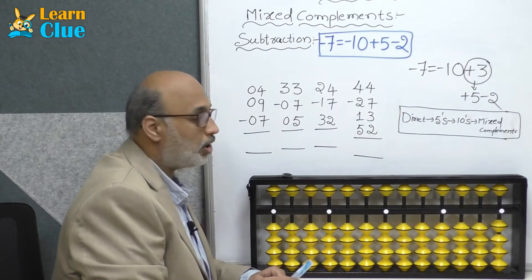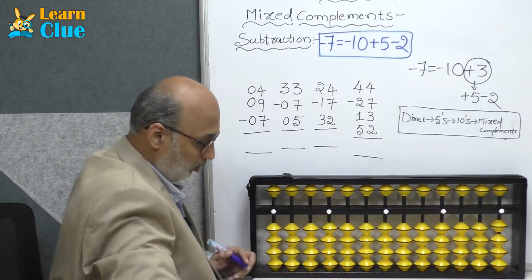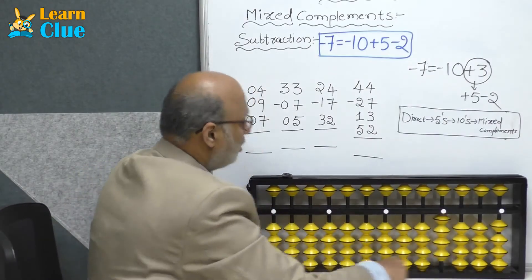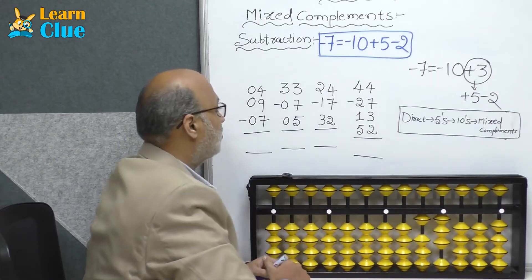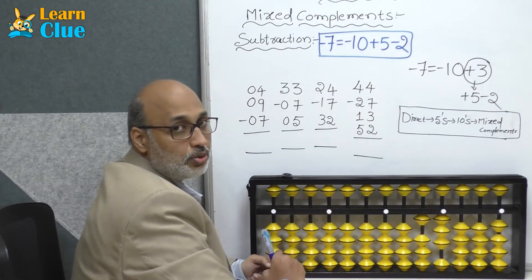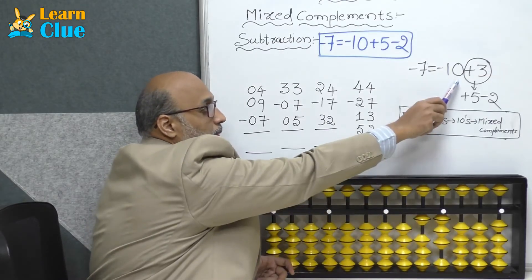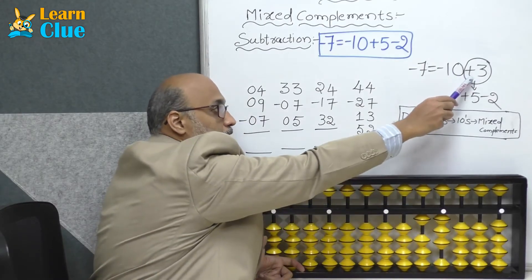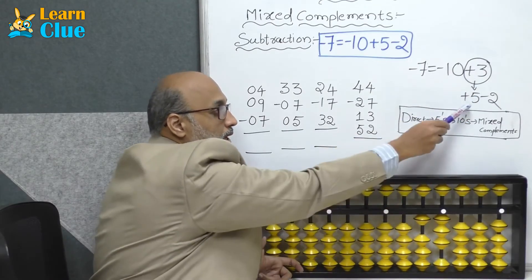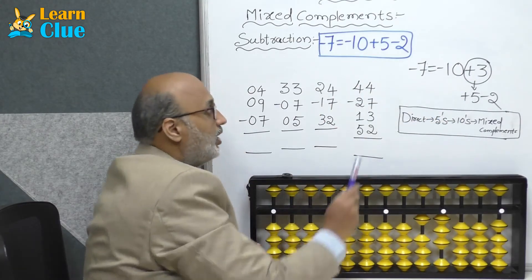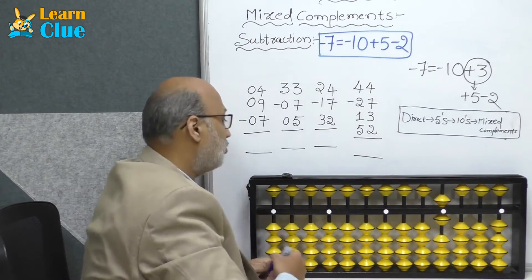Now we are going to learn about mixed complement subtraction minus 7 technique. Let's see a couple of problems. First problem: plus 4, plus 9. Who is the friend of 9? It's 1. So what we are supposed to do: minus 1 plus 10. Now they are asking minus 7. Who is the friend of 7? It's 3. The technique for minus 7 is minus 10 plus 3, but plus 3 is not possible. So we find a solution in 5's complements for plus 3, which is plus 5 minus 2. Replace this in the place of plus 3: it becomes minus 10 plus 5 minus 2. Apply the same: minus 10 plus 5 minus 2. The answer is 6.